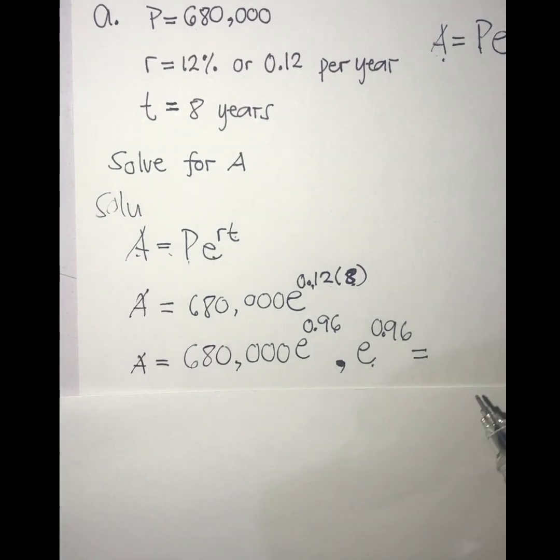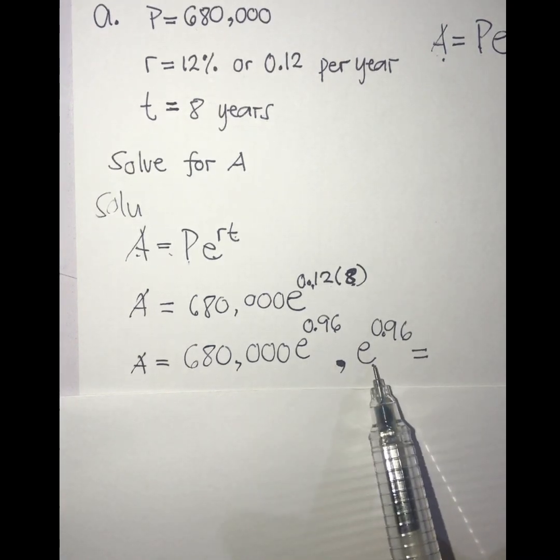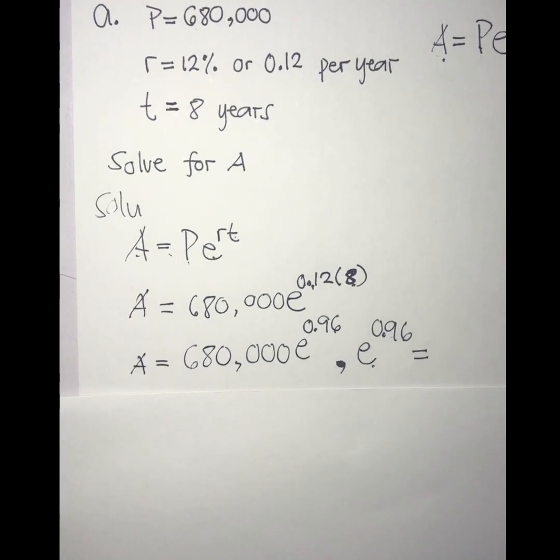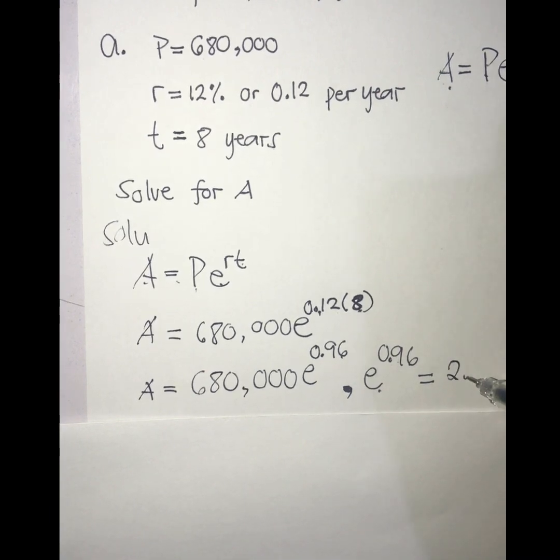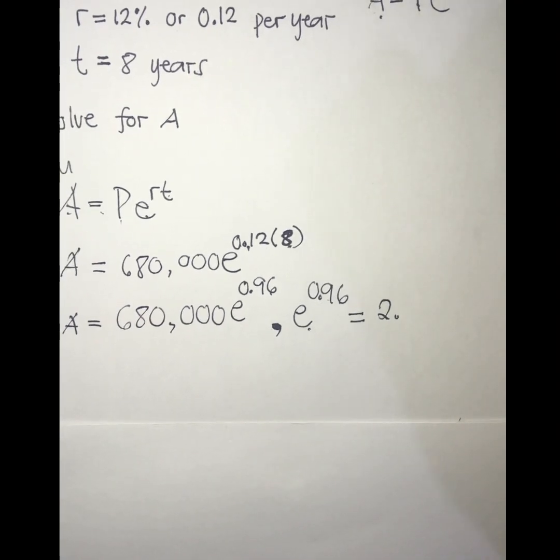At this point of time, we are going to use the calculator to find the value of e raised to the power of 0.96. Using the calculator, we can find the value, and the value of it is equal to 2.611696.